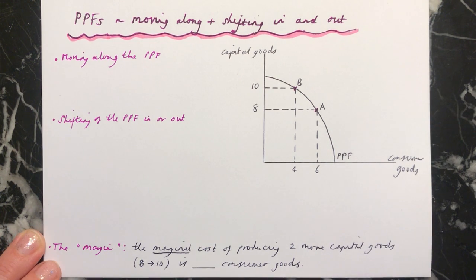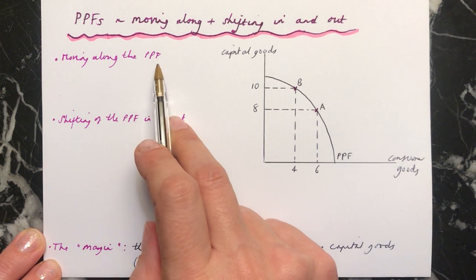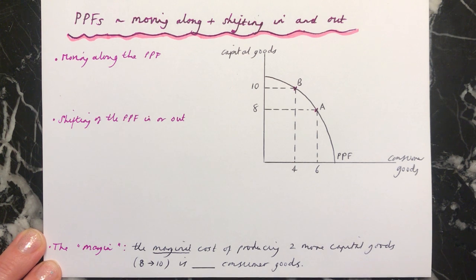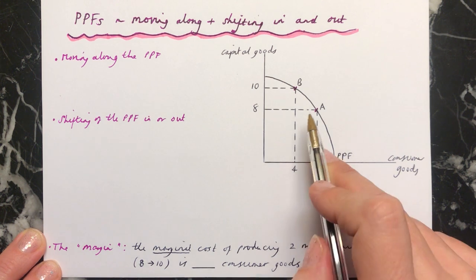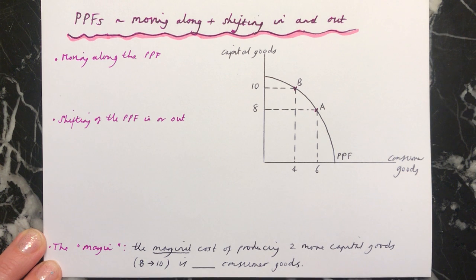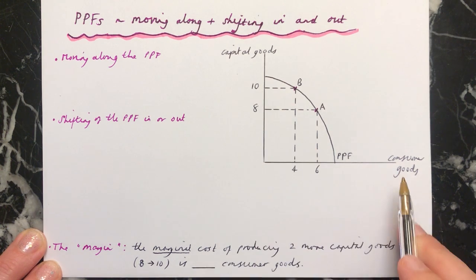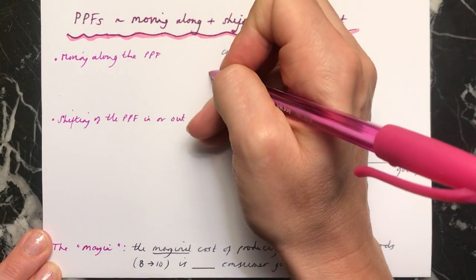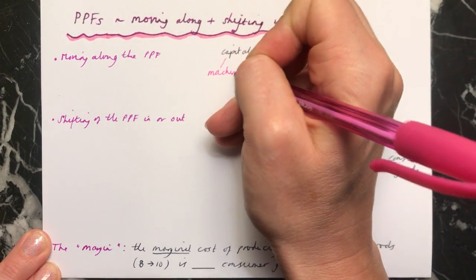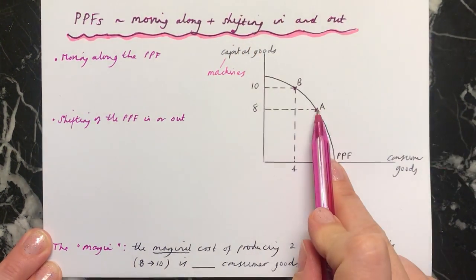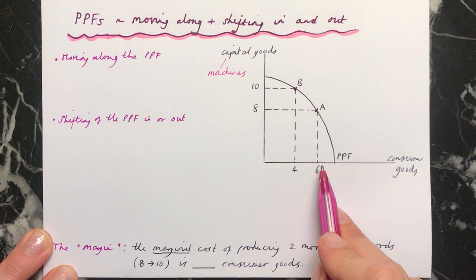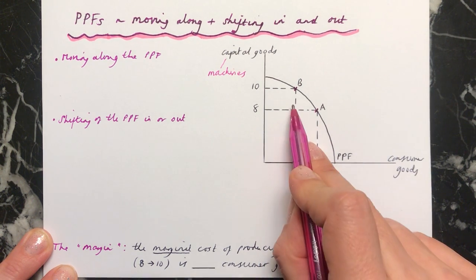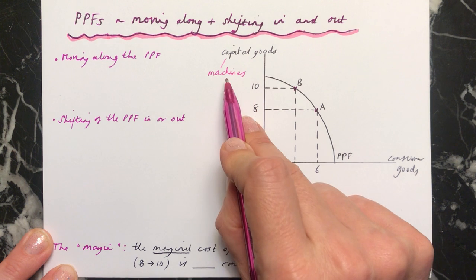So the first thing to say is: if you move along the PPF, what's the impact in the economy? For example, if we went from point A to point B, what's the impact going to be? We talked in the last video about the difference between capital goods and consumer goods. If we go from A to B, we're going to be making less consumer goods but we're going to be making more capital goods — more machines.